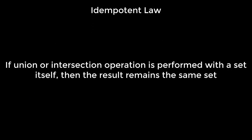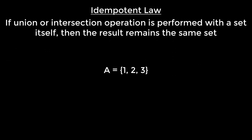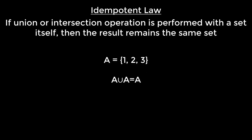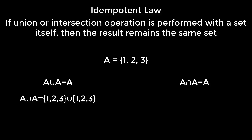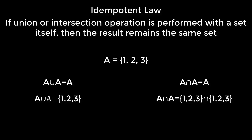The next law is the idempotent law. It states that if the union or intersection operation is performed with the set itself, then the result remains the same. Suppose we have a set A with elements {1, 2, 3}. Then according to the idempotent law, A union A is A and A intersection A is A. If we take the union of {1, 2, 3} and {1, 2, 3}, obviously the output will be {1, 2, 3} because in a set we do not repeat elements. On the other hand, if we take the intersection operation, in both sets the common elements are {1, 2, 3}, therefore the result will be the set {1, 2, 3}.